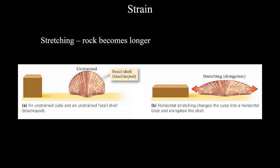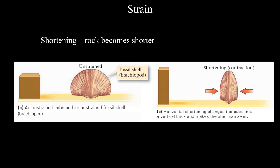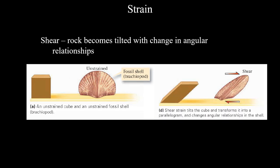Here's a divergent plate boundary example using a cube: tensional stress causes the cube to stretch, lengthening horizontally and shortening vertically. In the convergent case, compressional stress causes the cube to lengthen vertically and shorten horizontally. In the transform case, applying shear stress turns the perfect cube into a rhombus — like taking a deck of cards and smearing them out along the table.